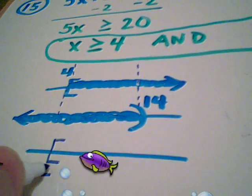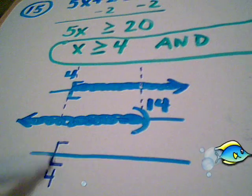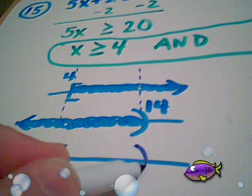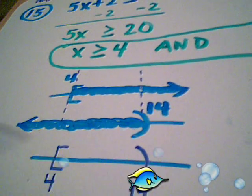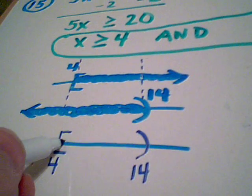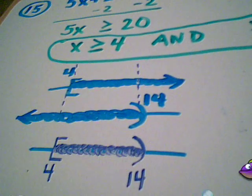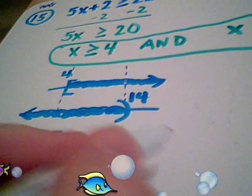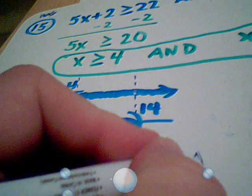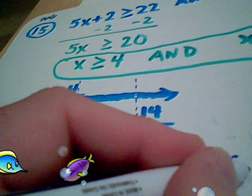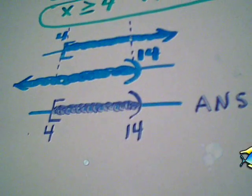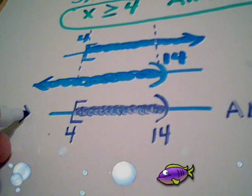So our final answer would be all numbers between 4 including 4 and 14 excluding 14. So now we don't need to look back up at the helper graphs anymore. This is actually my answer graph right here, so this is my answer or my solution to the compound inequality.